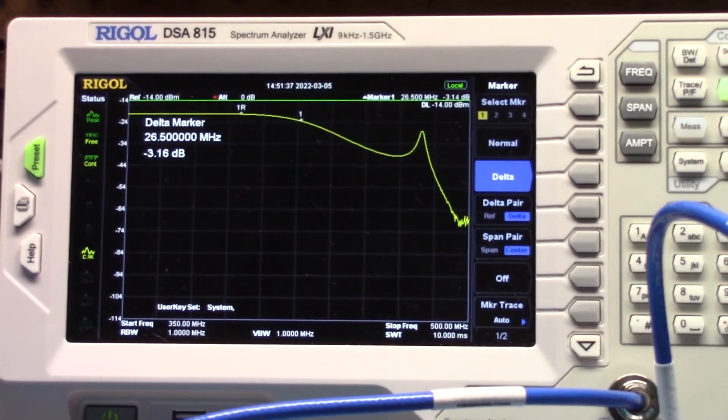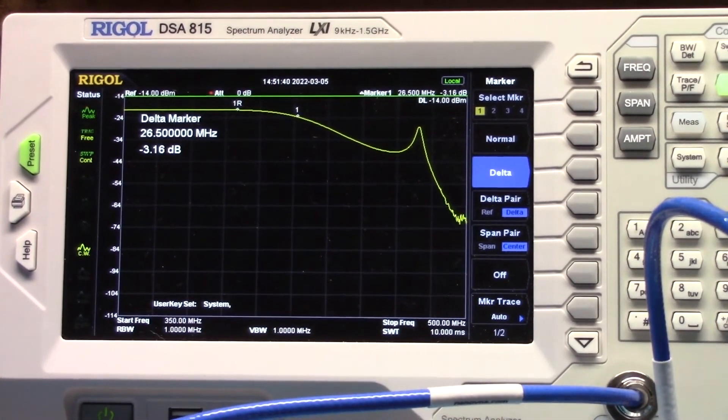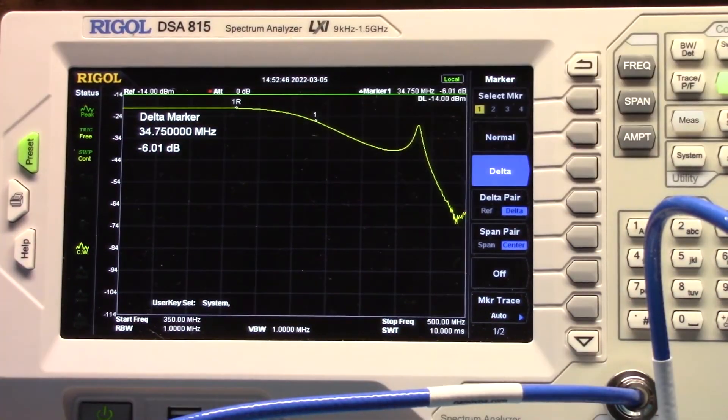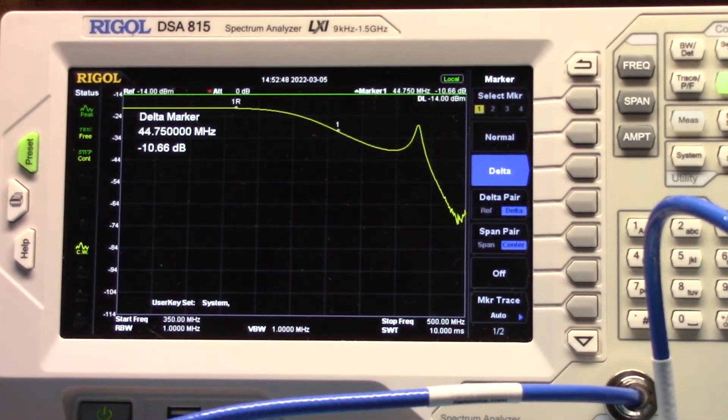So this filter at 426.5 megahertz has dropped 3 dB of signal, and then it'll keep on going down as we go.